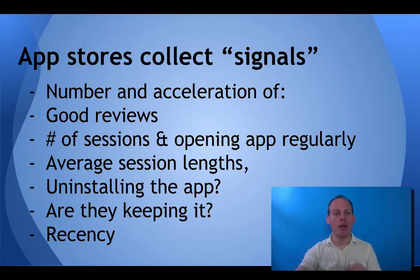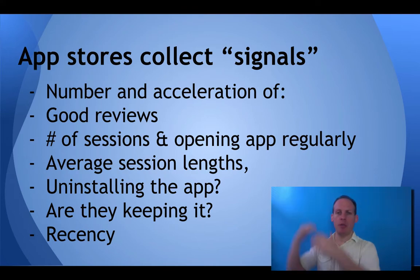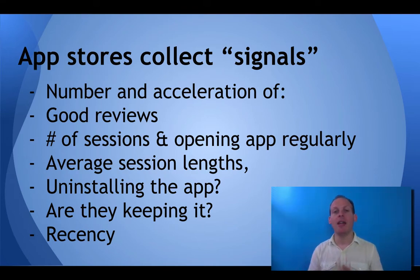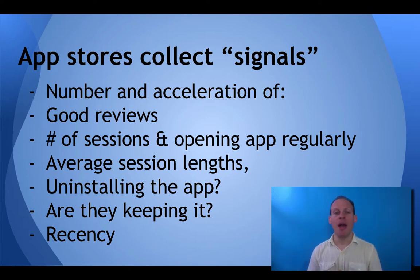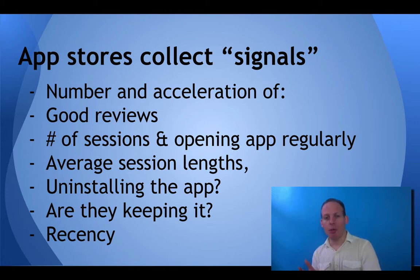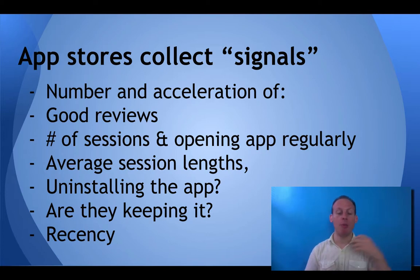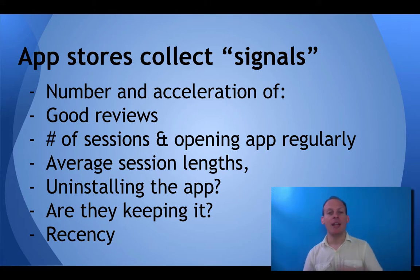Now I want to tell you about how the app stores decide which app should be first and which app should be 100. They collect data — or what I call signals — about your app. The data they collect includes the number of reviews, the quality of the reviews, the number of sessions that people have, and the number of downloads. These are all quality signals.